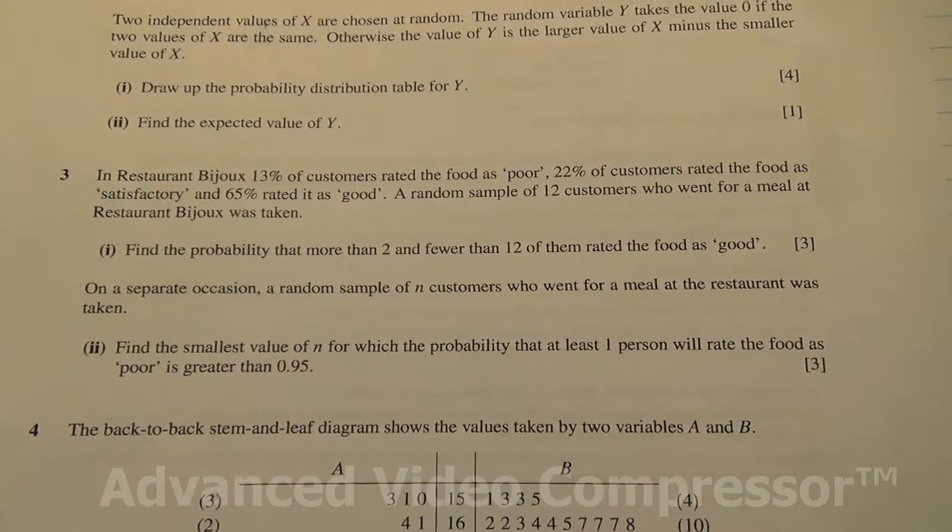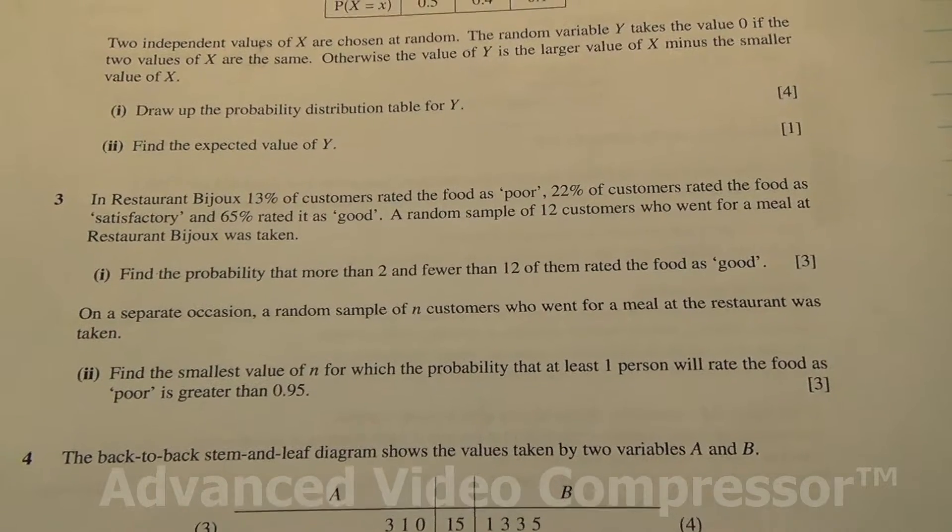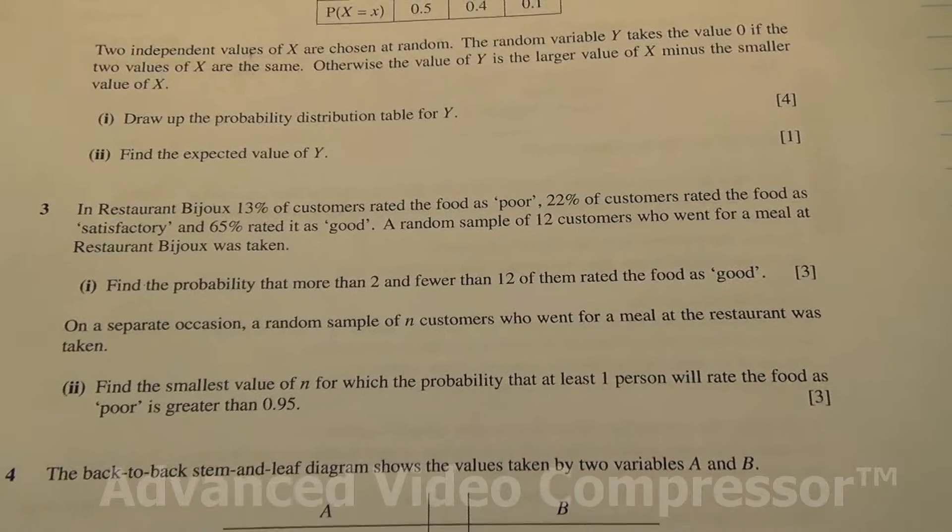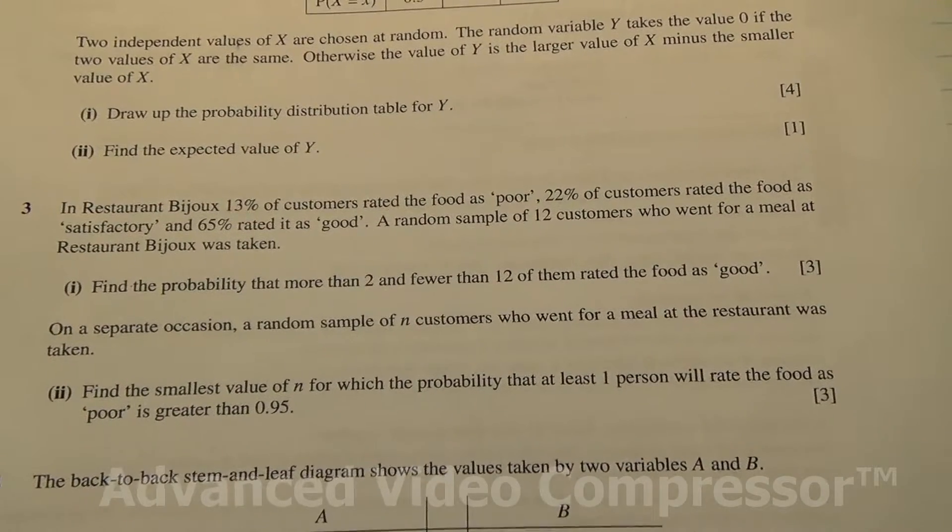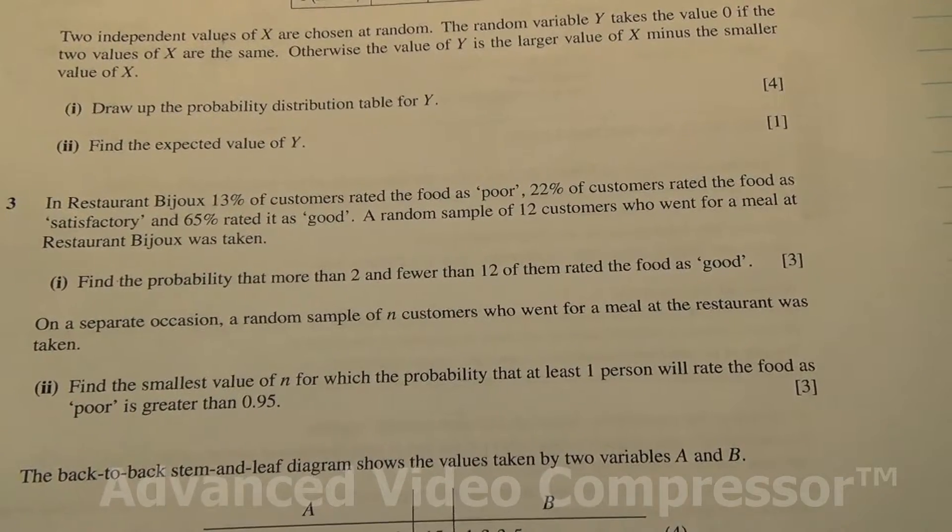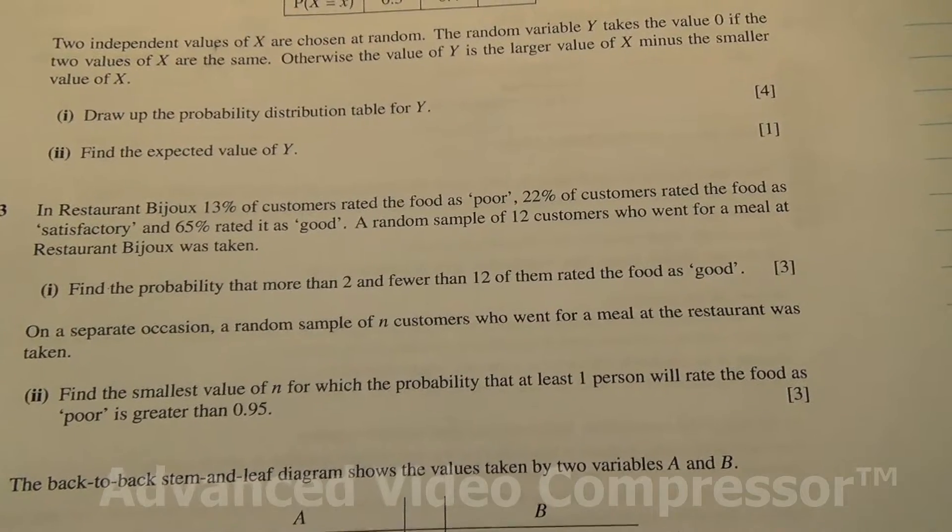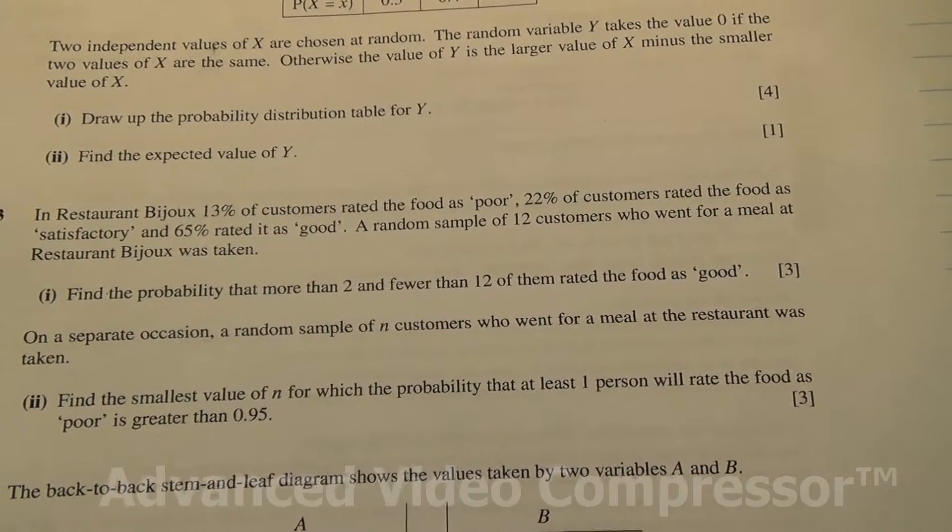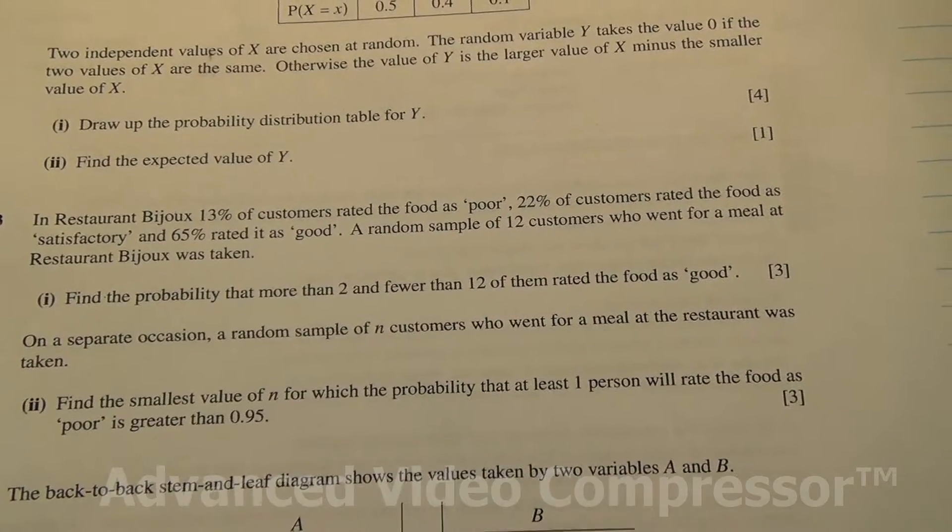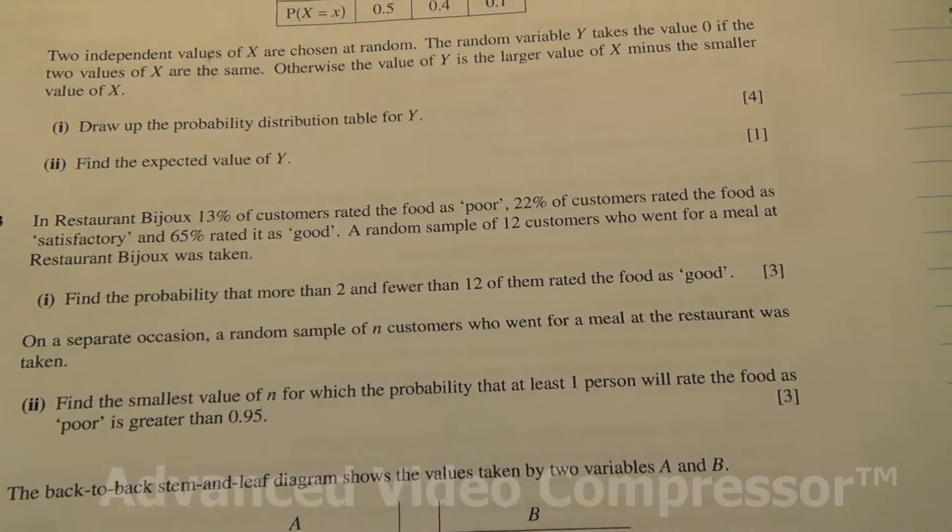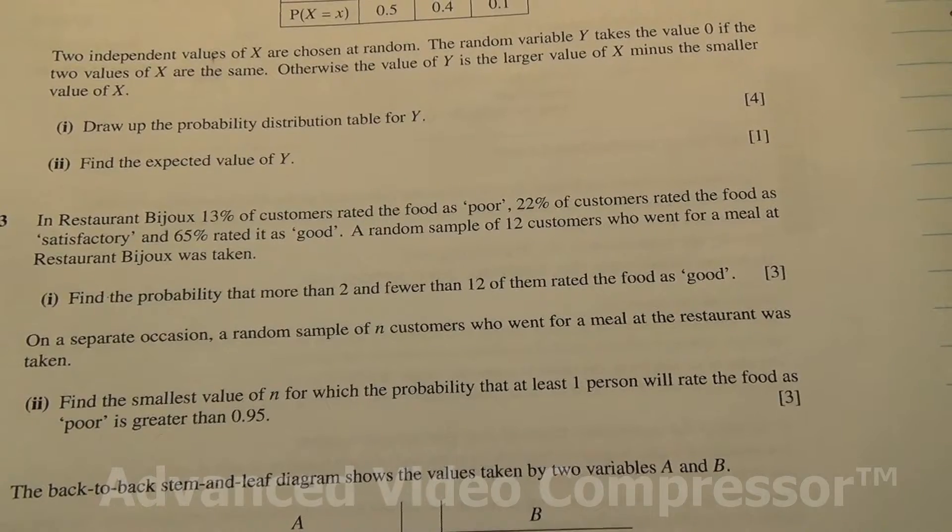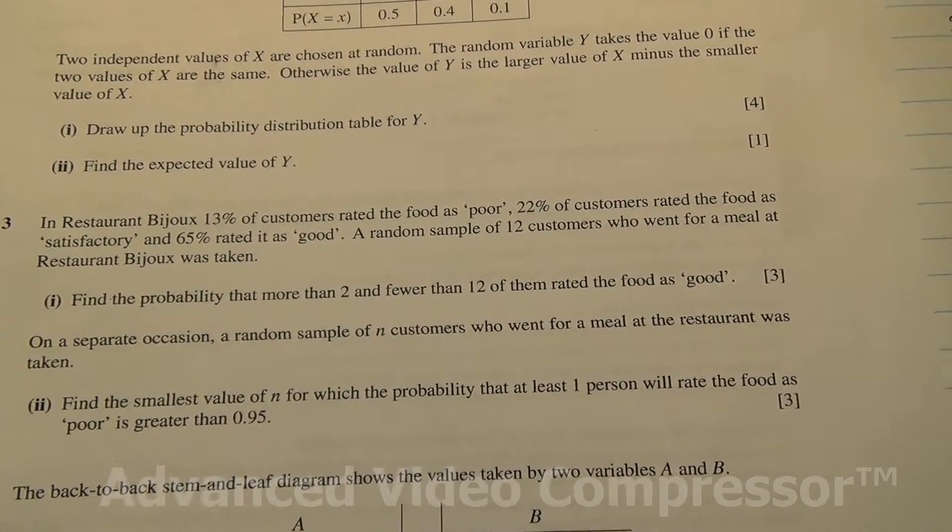Hi. Question number 3. In Restaurant Bijoux, 13% of customers rated the food as poor, 22% rated the food as satisfactory and 65% as good. A random sample of 12 customers who went for a meal at the restaurant was taken. Find the probability that more than 2 and fewer than 12 of them rated the food as good.